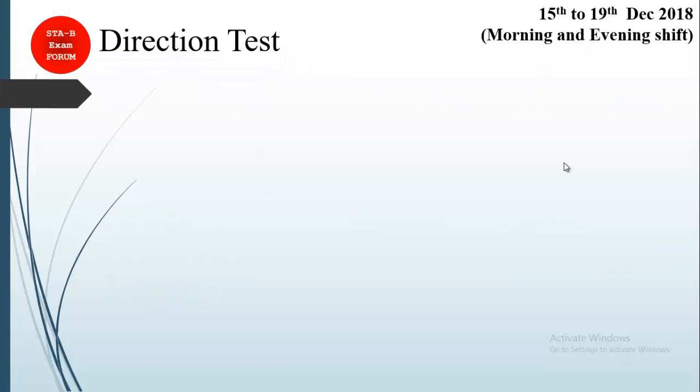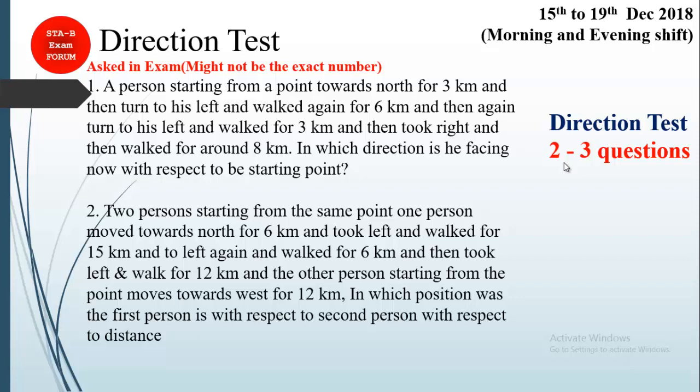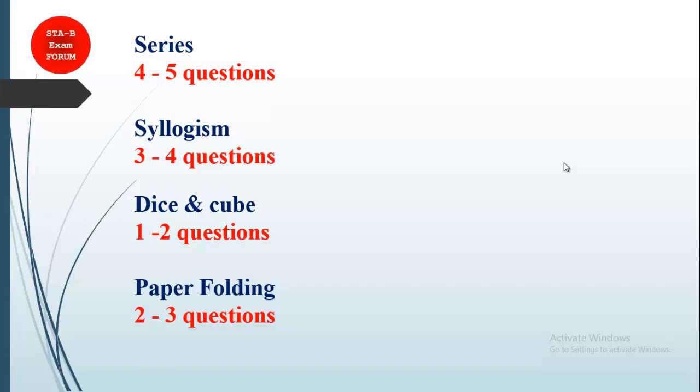Moving to the next question — this is from the direction test. You can expect two to three questions from direction test. One type: you go north for five kilometers, then turn left for six kilometers, then walk three kilometers — at what direction are you facing from the starting point? Another type: two persons start from the same point and move in different directions — find the distance and position of the first person relative to the second.